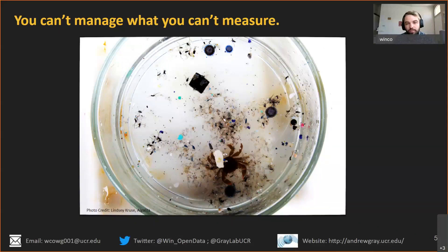In microplastic research, a lot of times we get samples that look like this. You can have small pieces of microplastic, crabs, organisms, sediments, and the challenge is trying to pick out the plastic from the sample in the environment. This is really important because you can't manage what you can't measure. If we want to end microplastic pollution in the environment, we need to be able to measure it. Visually, I can see a lot of things that look like microplastic in this sample, but there are also some things that are questionable.